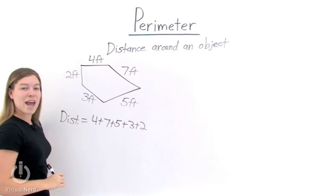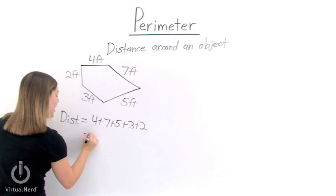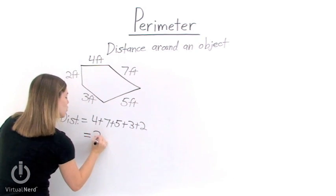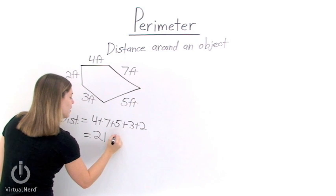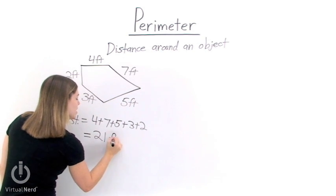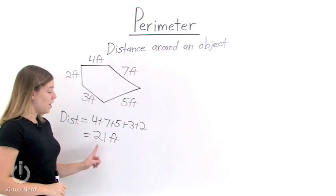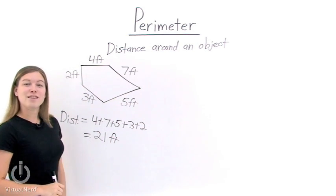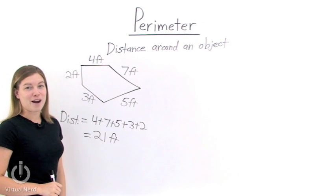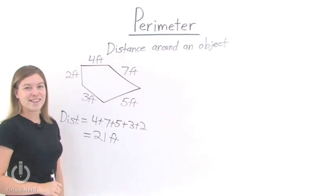When we add up all of the sides, we get 21. So we get a distance of 21 feet. That means that 21 feet is the perimeter around this object.